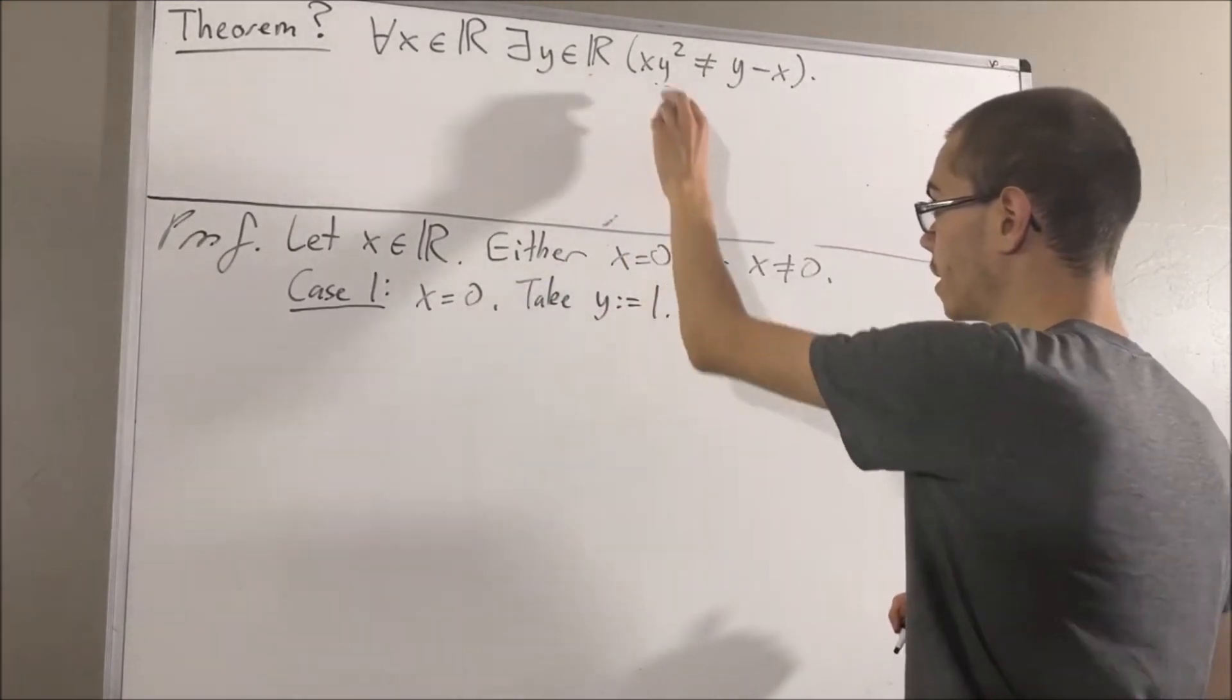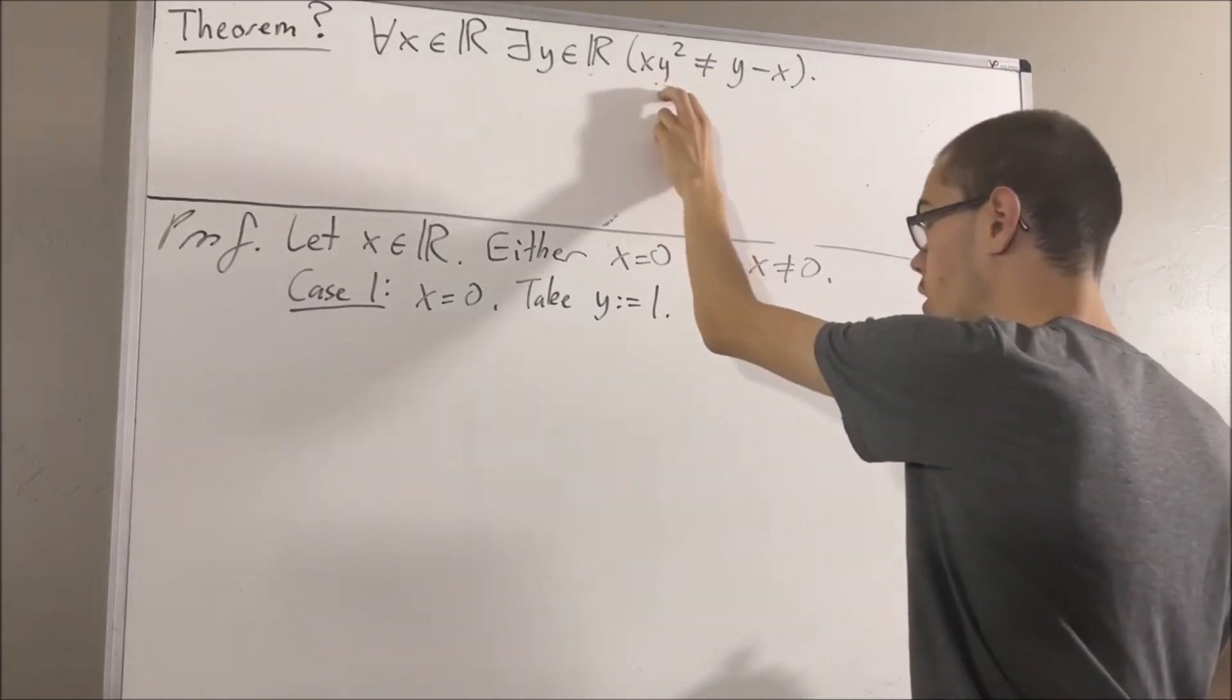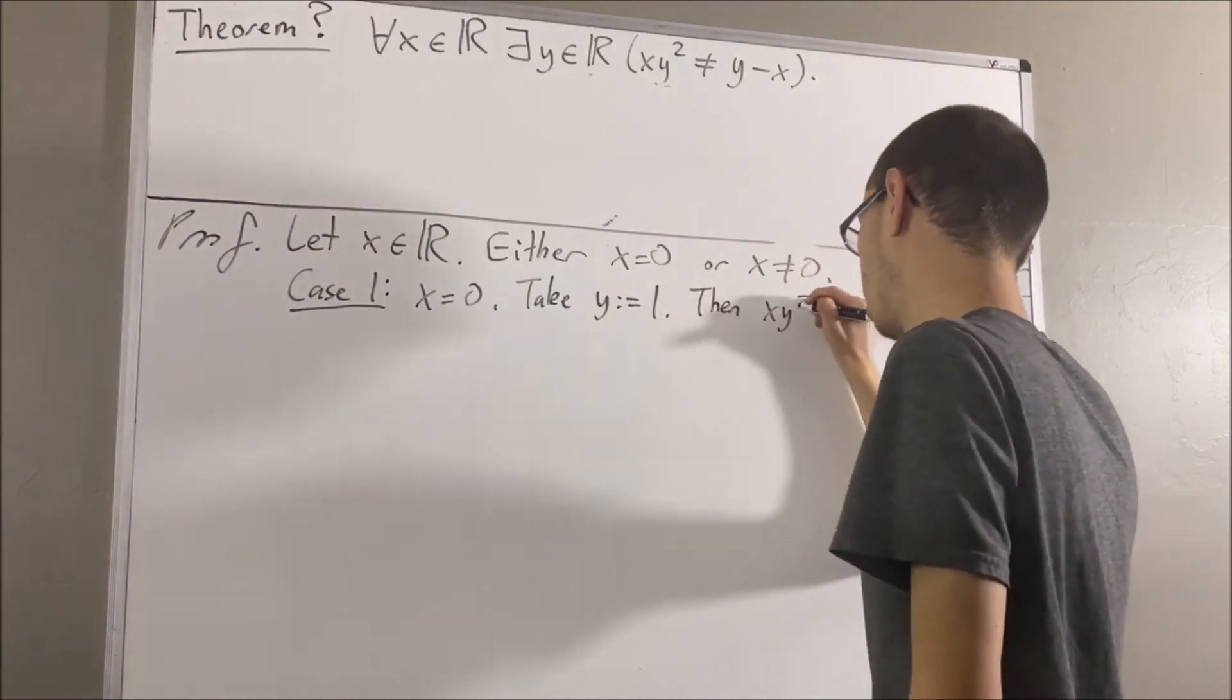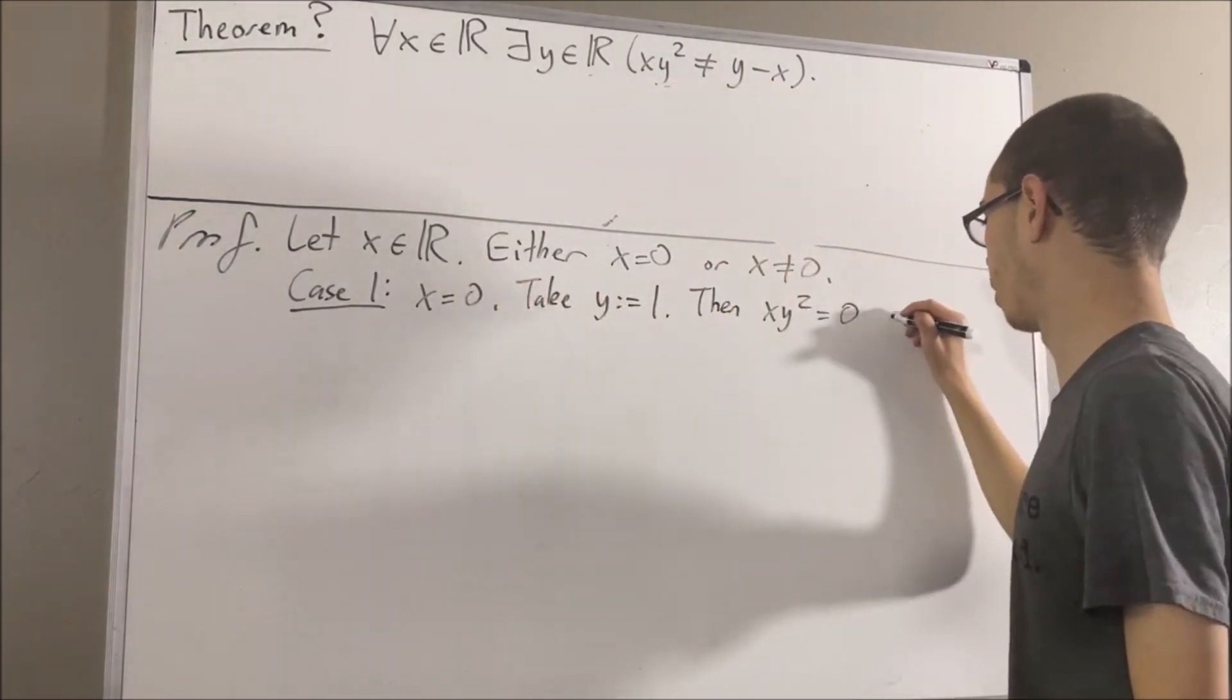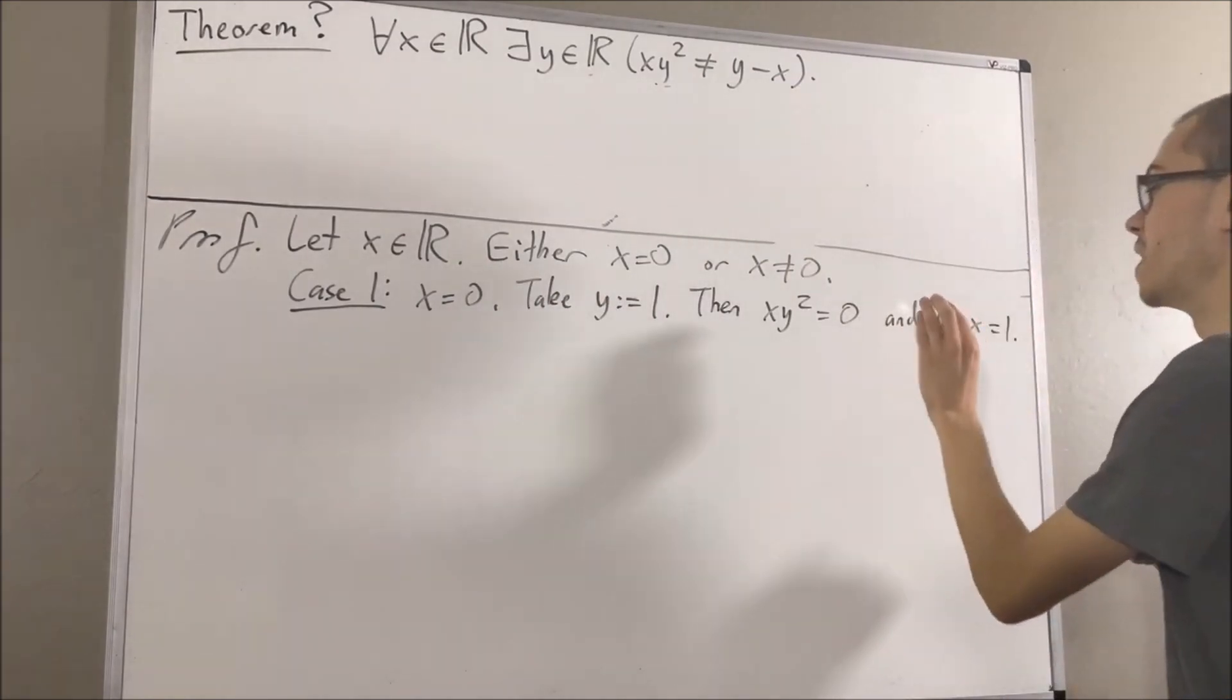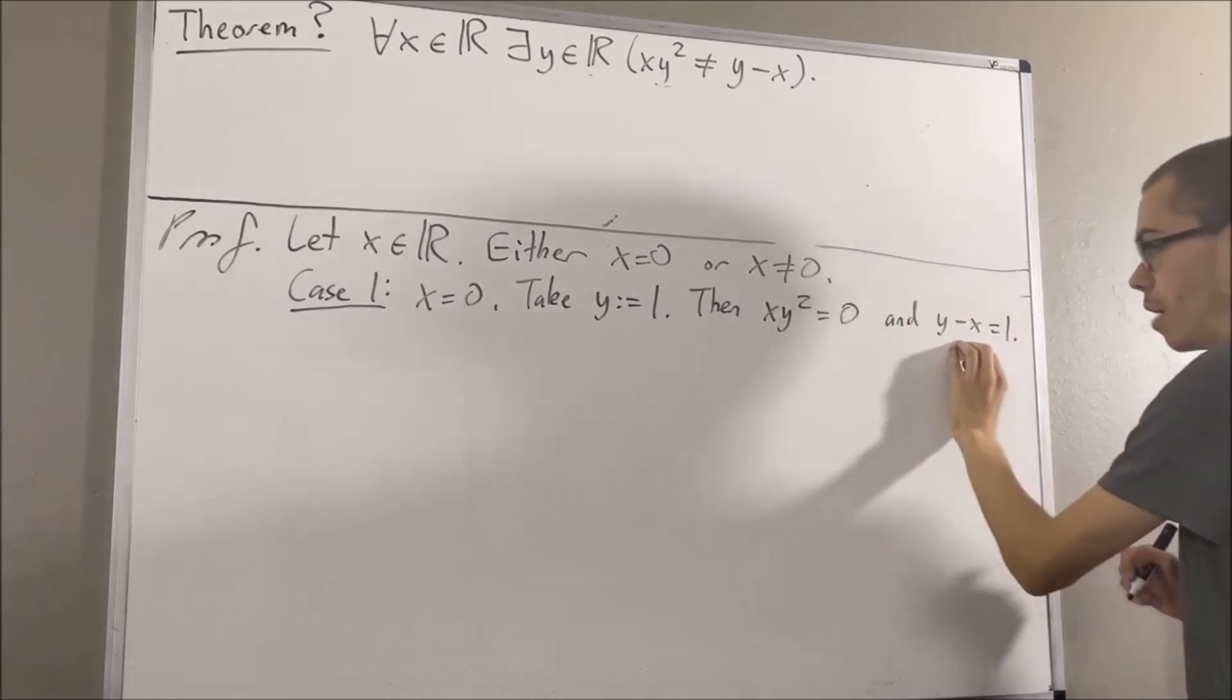Taking y to be one, we have that xy squared is equal to, well, zero times one squared, which is zero. And y minus x is just one minus zero, which is one. Since zero is not equal to one, xy squared is not equal to y minus x.